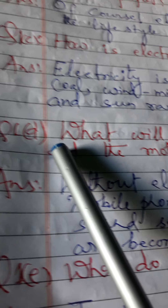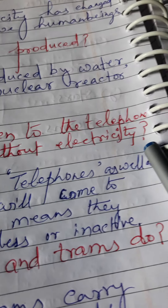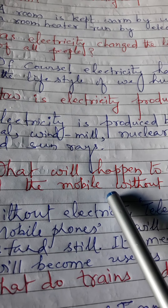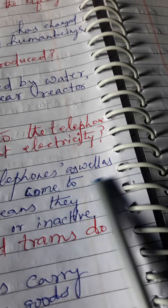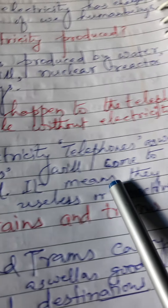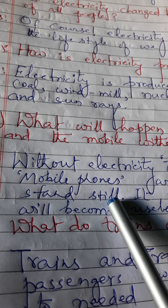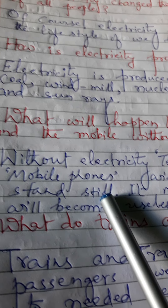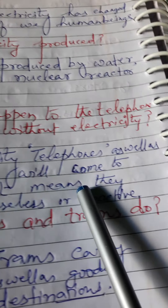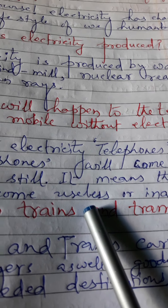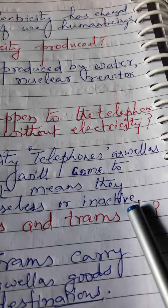Question 1d: What will happen to the telephone and the mobile without electricity? Bijli ki anupasthiti mein, mobile phone aur telephone ki kya isthiti hogi? Answer: Without electricity, telephone and mobile phone will come to a standstill. Bina bijli ke mobile phone aur telephone nishkriye ho jayenge — they will become useless or inactive.